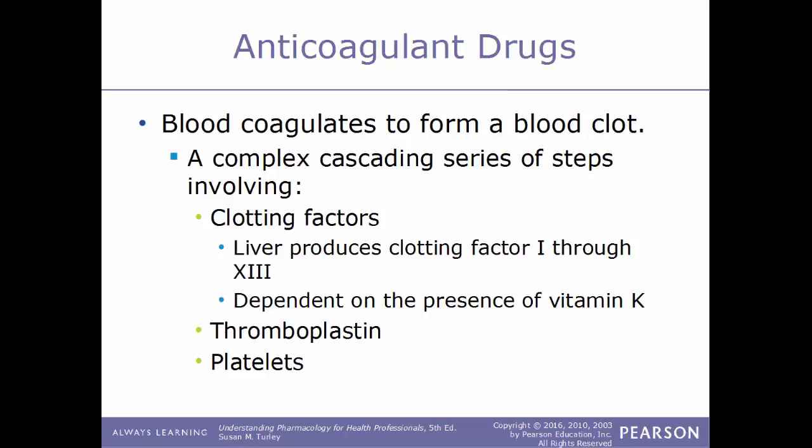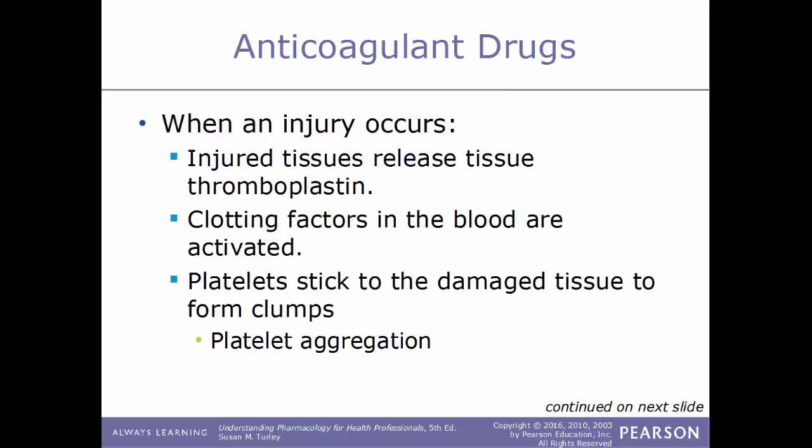Our first type of drug for this chapter are anticoagulant drugs. Blood will coagulate to help form a blood clot through a very complex, cascading series of steps involving many different components. One of the key things involved are the clotting factors, which are produced by the liver and are numbered from 1 to 13. These clotting factors are also dependent on the presence of vitamin K. Some other key components of a clot being formed are thromboplastin and also platelets.